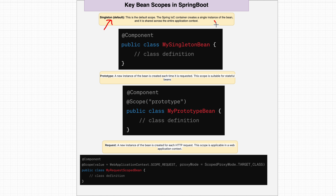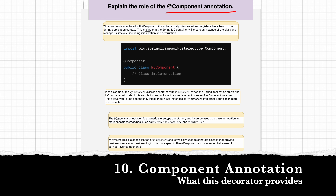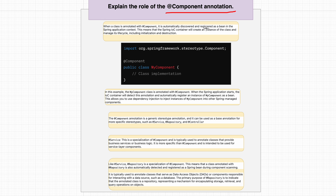There are different bean scopes. The default scope is Singleton — a single instance of the bean is shared across the entire application context. Prototype scope creates a new instance each time the bean is requested; it is suitable for stateful beans, where different states require different instances. Request scope creates a new bean instance for each HTTP request; this scope applies in a web application context, specified using WebApplicationContext.SCOPE_REQUEST.